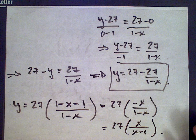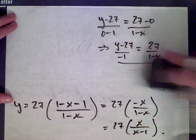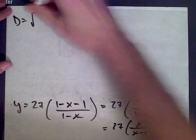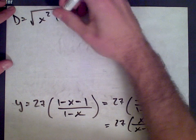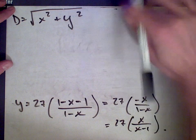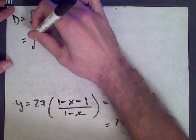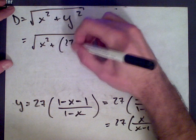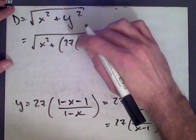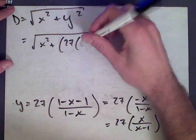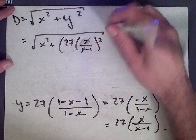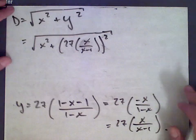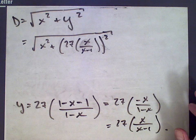Next we want to plug this into our distance formula. The distance equals the square root of x squared plus y squared. Plugging our expression for y in, we get the square root of x squared plus (27 times x divided by (x minus 1)) squared.